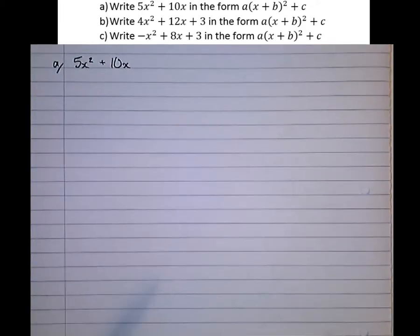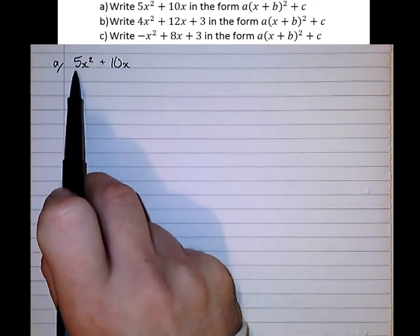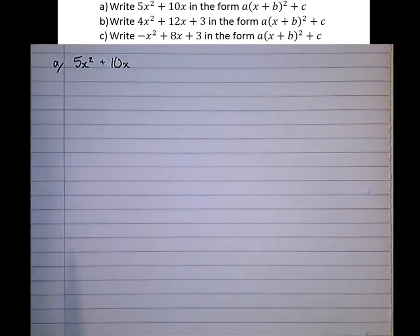We're now going to look at completing the square questions that are slightly more difficult because they've got a coefficient other than 1 in front of the x squared term. So let's write this first one, as asked in the question, in complete square form.